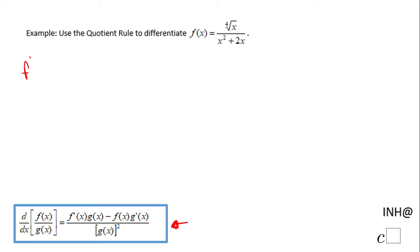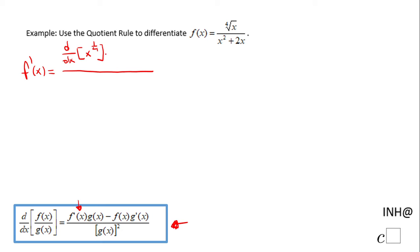Let's see how we use the quotient rule. So we have f prime of x equal. And if you notice on the quotient rule, the first thing we have is f prime of x, which means the derivative with respect to x of your numerator, which in this case is x to the 1 over 4. I'm going to change that fourth root into this format, times g of x, times x squared plus 2x.